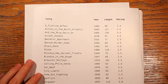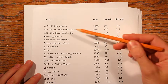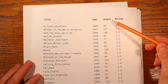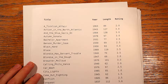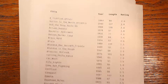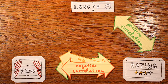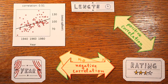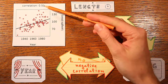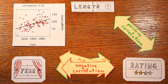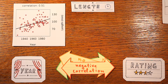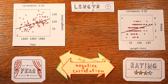Here's a real-life dataset in which this actually happens. It gives us the name of the movie, the year it was released, the length in minutes, and a rating between one and four stars in half-star increments — 100 movies in total. First, looking at the correlation between release year and movie length, there is a positive correlation: the newer movies tend to be longer, and the correlation coefficient turns out to be 0.51. The relationship between movie length and rating is also positive, with a correlation coefficient of 0.32 — so longer movies tend to get higher ratings.